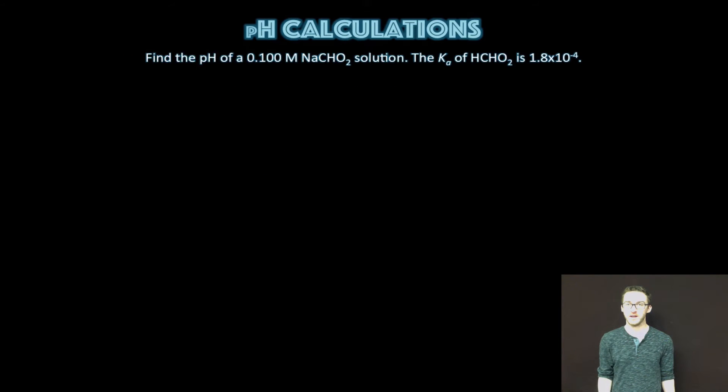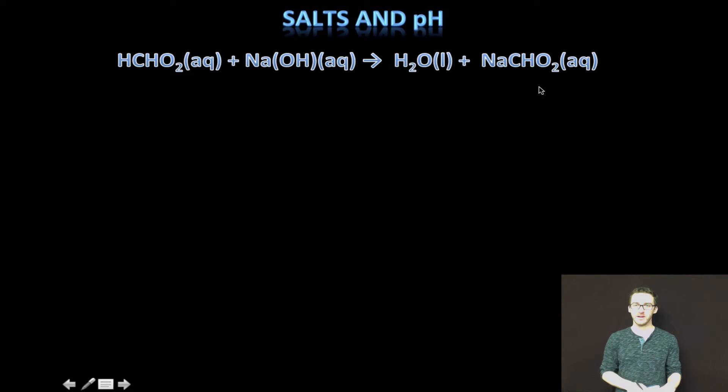Okay, so let's take a look at that example problem that you've got in your notes. We're asked to determine the pH of a 0.100 molar sodium formate solution. We're told the Ka of formic acid is 1.8 times 10 to the minus 4. Okay, so the first thing I want you to think about is the neutralization reaction that resulted in the formation of that salt sodium formate. And then think about the ions that make up our salt. We've got the sodium ion and the formate ion. And we're trying to decide which of these ions, if any, is going to affect the pH of our salt solution.